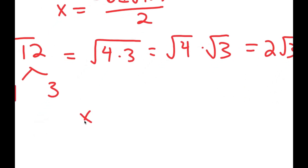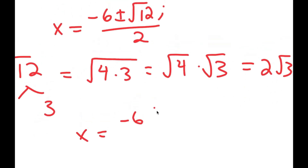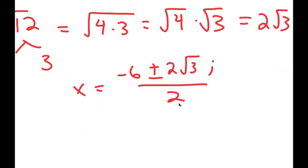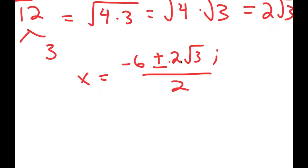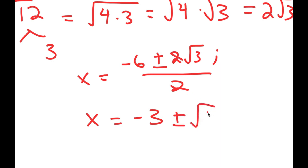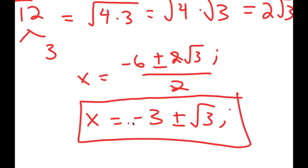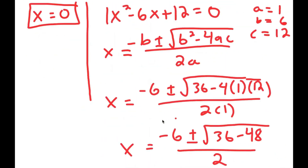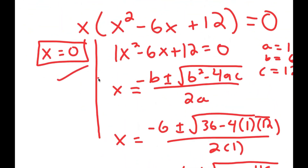So I get x is equal to negative 6 plus or minus 2 root 3 i over 2. If I divide my terms by 2, I get x is equal to negative 3 plus or minus square root of 3 i. So my three solutions are x equals negative 3 plus the square root of 3 i, x equals negative 3 minus the square root of 3 i, and x equals 0.